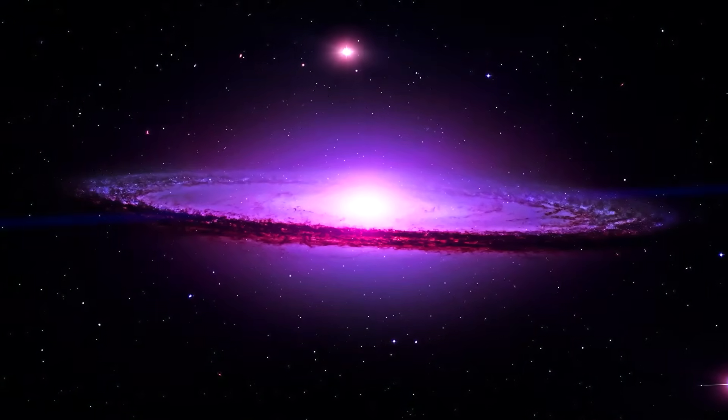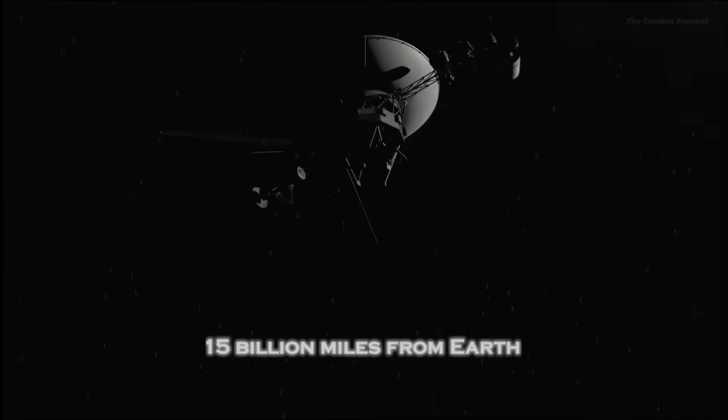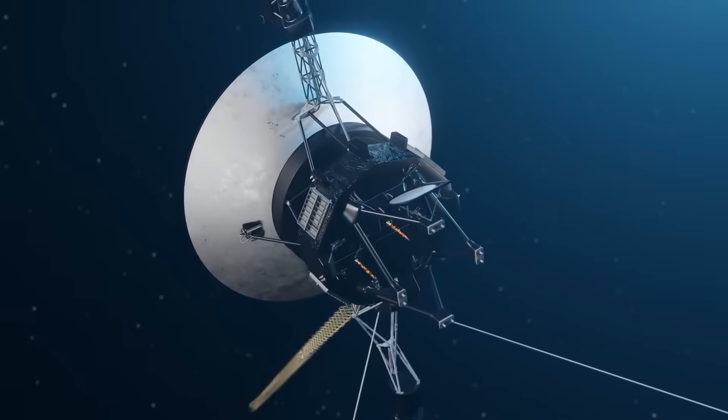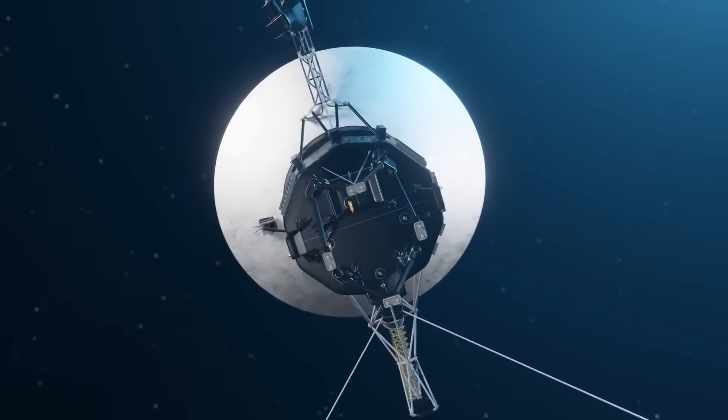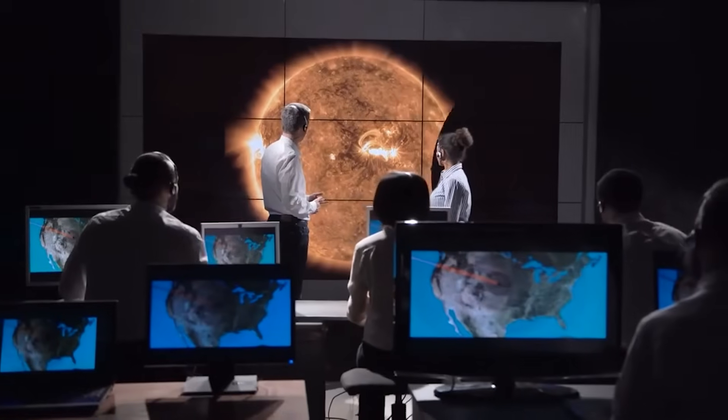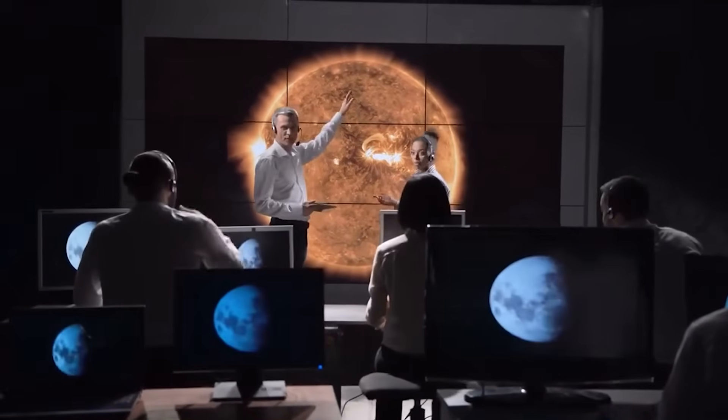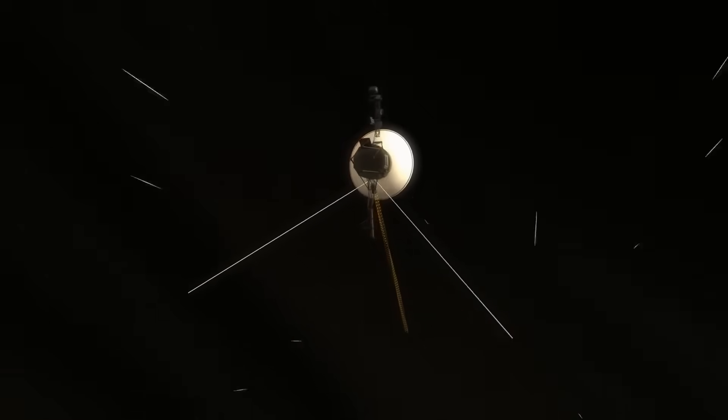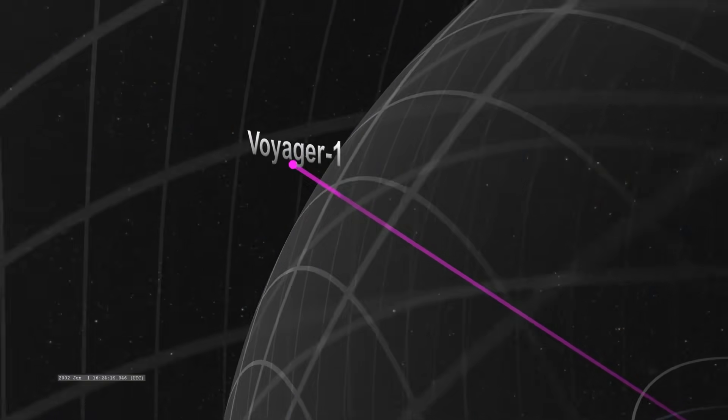The Unexpected Message from Voyager 1. At a staggering 15 billion miles from Earth, the spacecraft was expected to slowly lose contact as its power sources weakened. But in a shocking twist, NASA engineers re-established communication with Voyager 1, and the data it sent back was beyond anything they had anticipated.